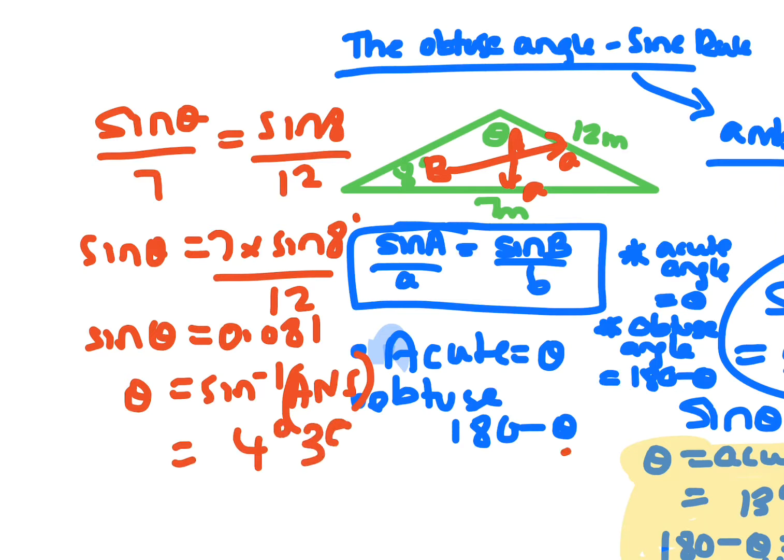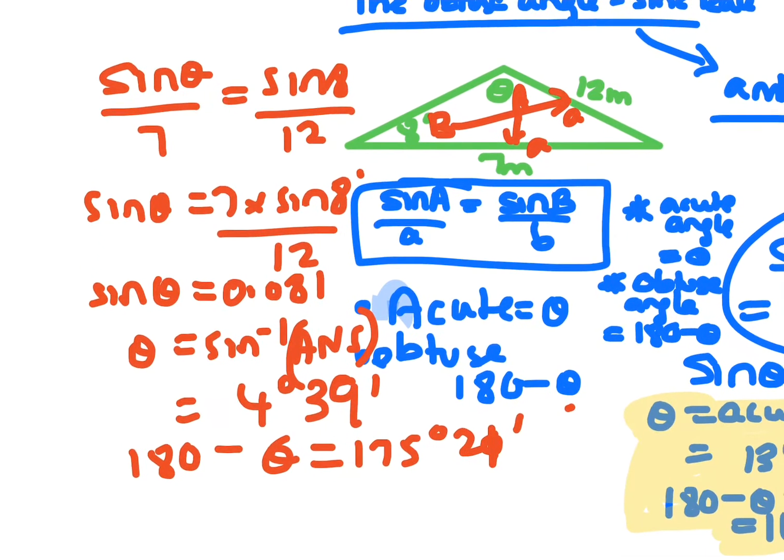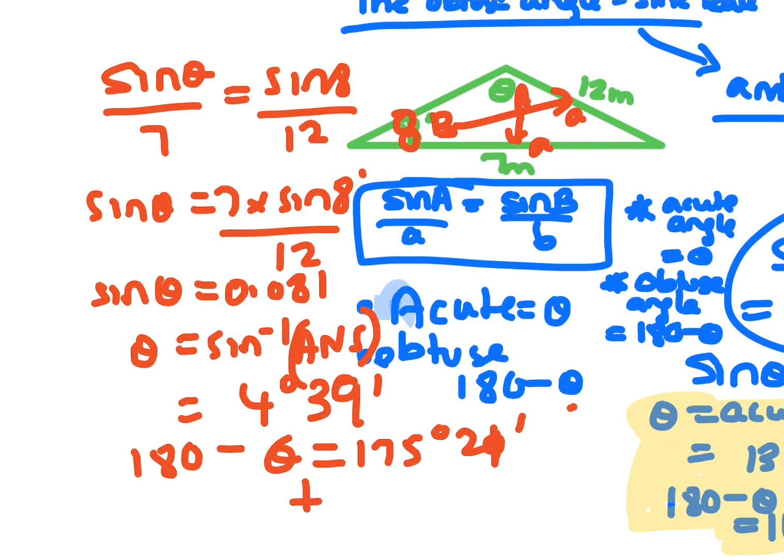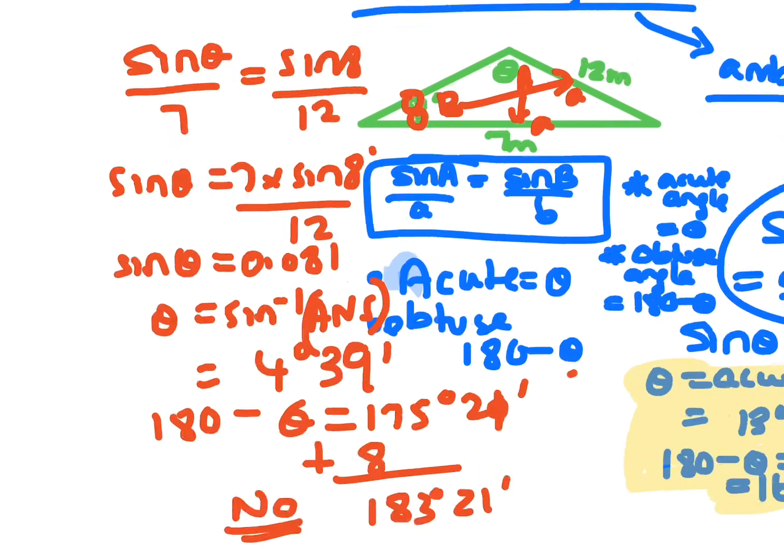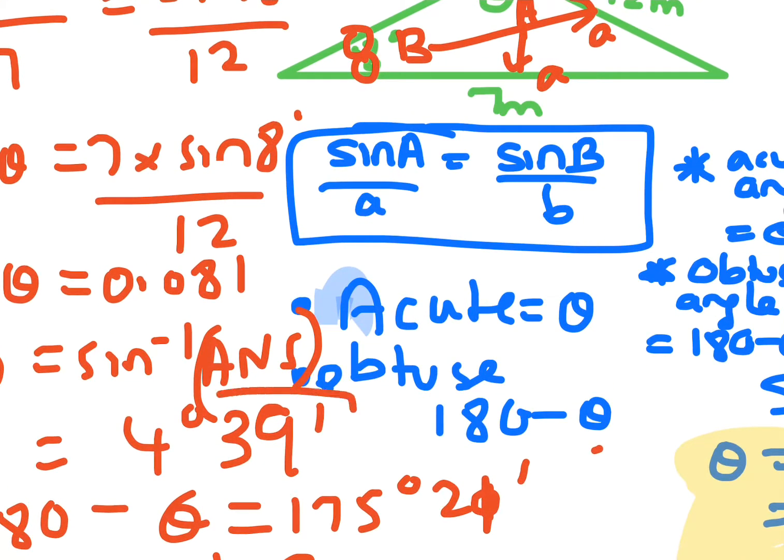So 4 degrees 39 minutes, and if you take that away from 180, you get 175 degrees 21 minutes. Now the question is, does that fit into the triangle? The only other angle we have in the triangle is 8, so if you add that on, that will give you 183 degrees 21 minutes. So no, it won't actually work. The only solution to this triangle here would be 4 degrees 39 minutes.